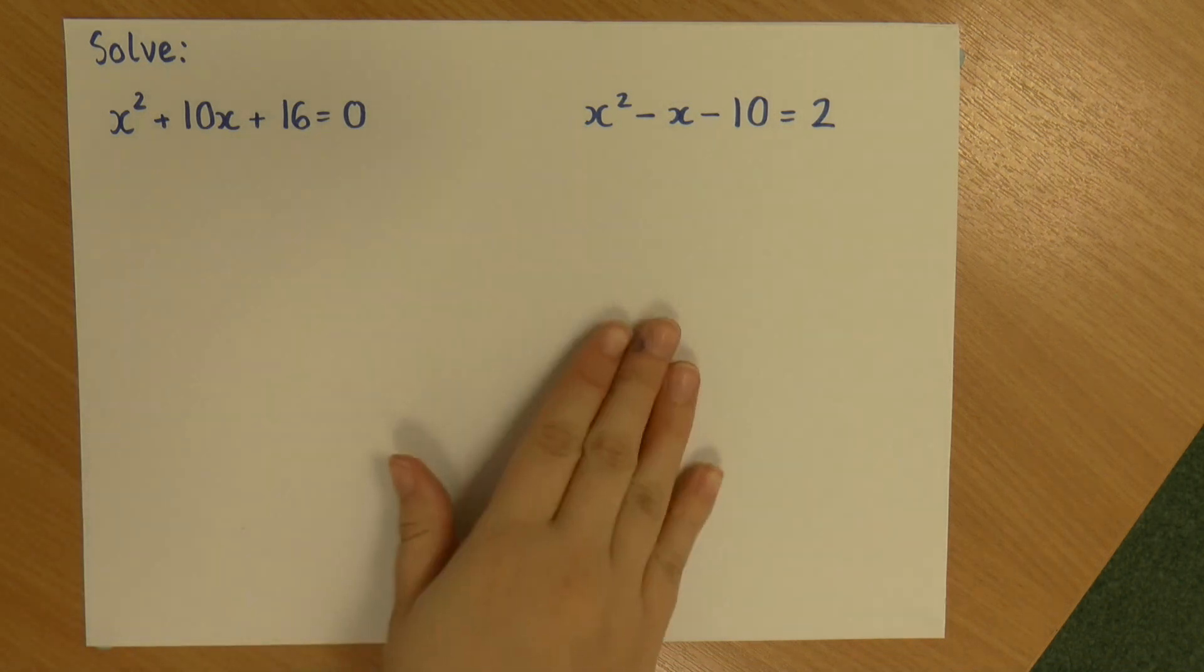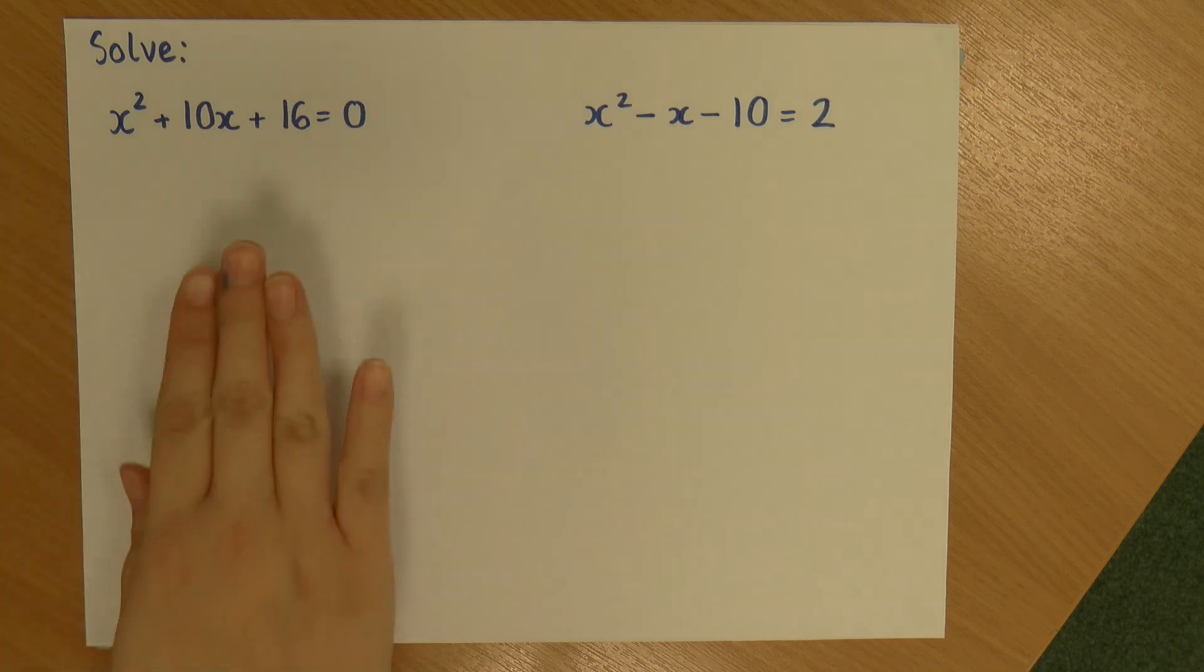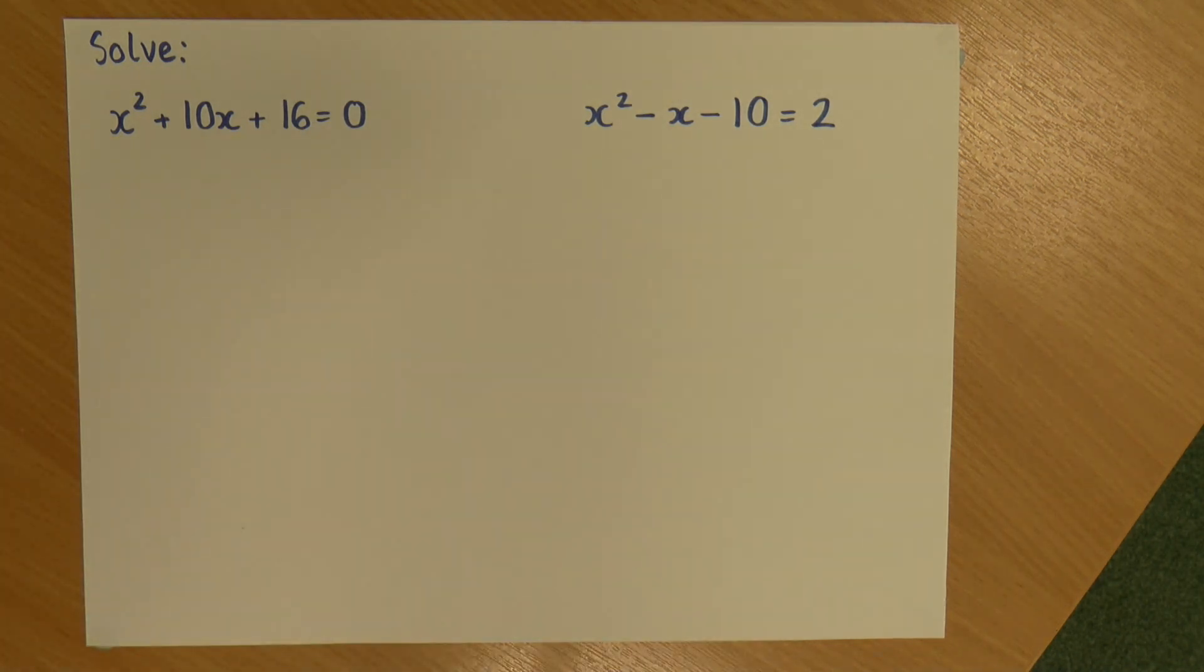The first thing it's important to know about quadratic equations is that there are always two values of x. So I will be finding two values. The first thing we do to solve these is factorise them. So let's start with this one on the left, and I'm going to factorise it.